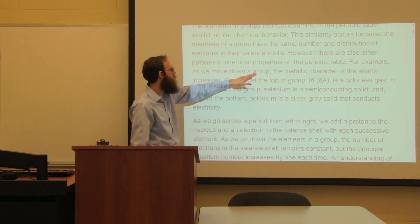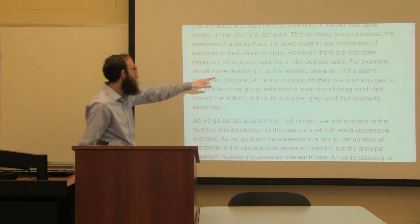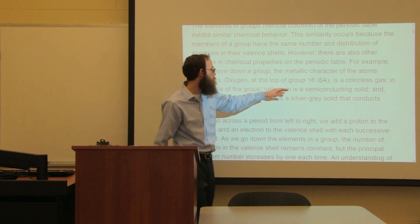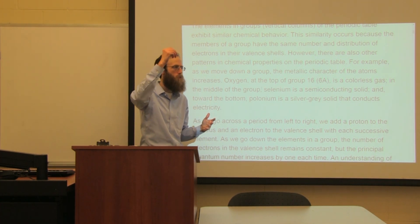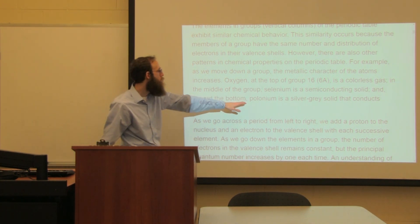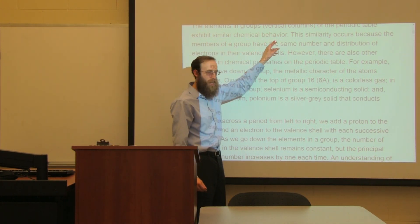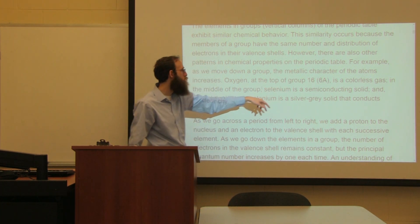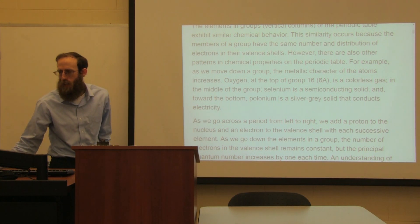However, there are also other patterns of properties on the periodic table. For example, as we go down a group, the metallic character of the atoms increases. In group 16, we have oxygen at the very top, which is a gas. As we go down, we have sulfur, selenium, tellurium, and at the very bottom we have polonium, which is a silver-gray solid. So we're going from an odorless gas at the top down into a semi-metal and then into a solid gray that conducts electricity - increasing metallic properties.